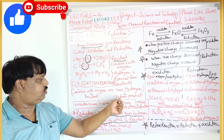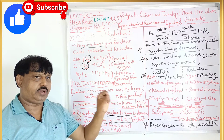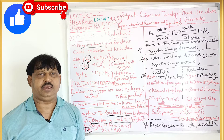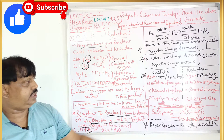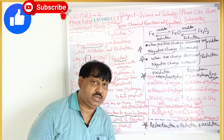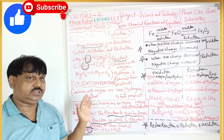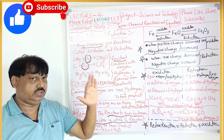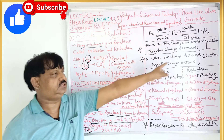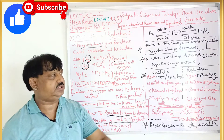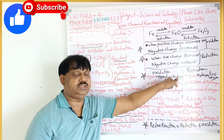Oxidation means losing one or more electrons. This is the new definition of oxidation. When positive charge increases — meaning negative decreases — that is oxidation. When positive charge decreases and negative charge increases, that is reduction. Yeh extra definitions hain. For standard 10, yeh extra knowledge ke liye hai.